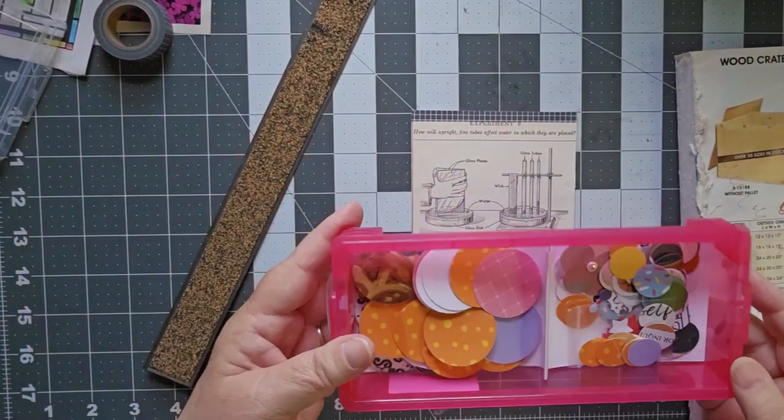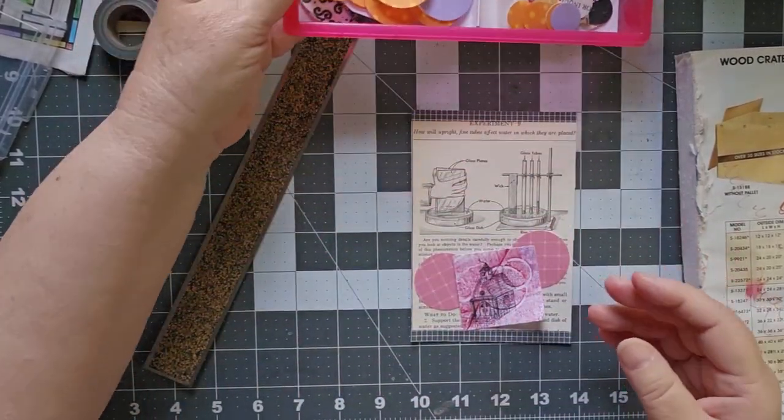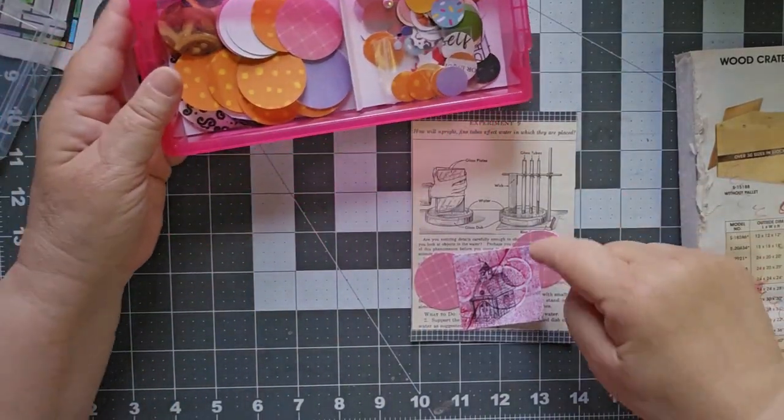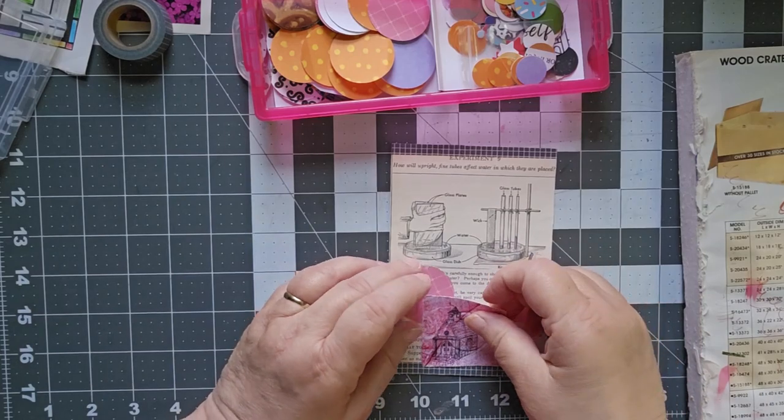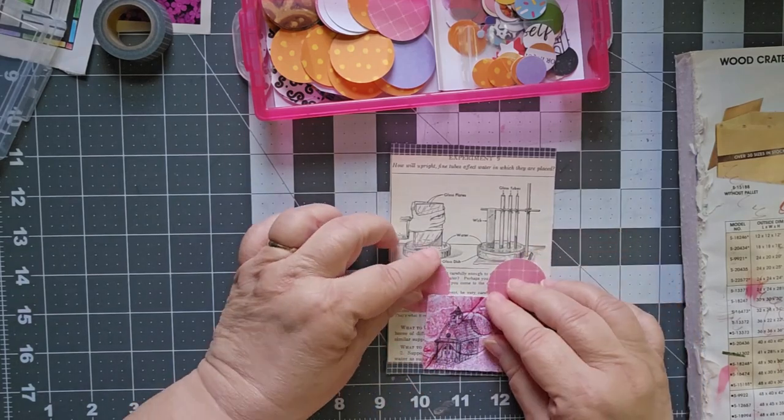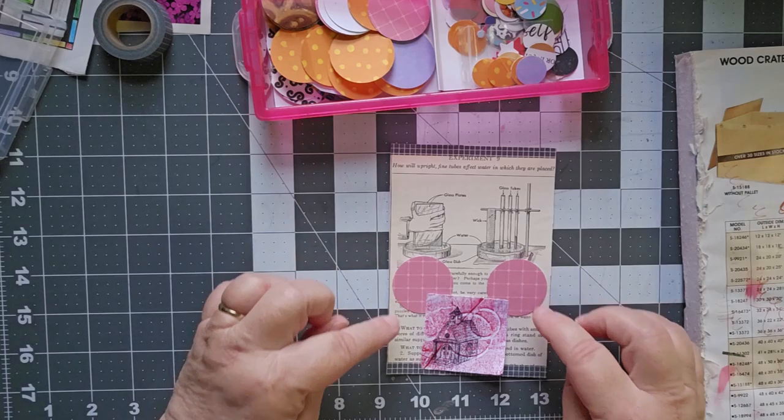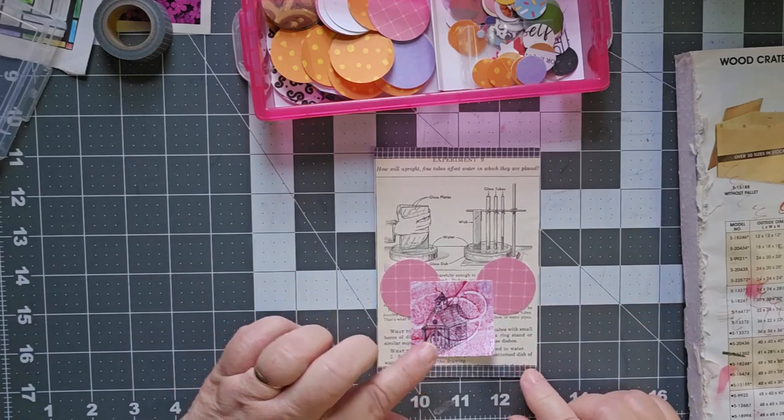I'm back. I went and got my circles. I figured with the circles here and here and the circles on here, it needs some circles behind it. And I found circles that look like they are graph paper. It's perfect.